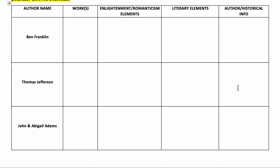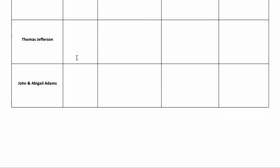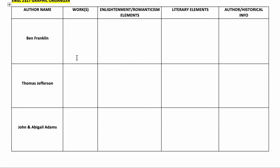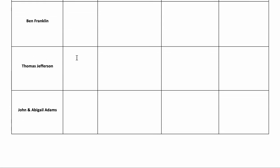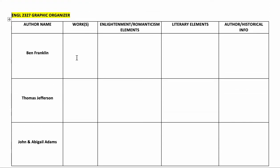I've listed the authors that you're going to read in this unit. You're going to read multiple works from some authors, one work from another. I don't expect you to take notes on five or six different poems — I want you to choose one or two of the works from each author, and then make sure that you have all of these boxes filled in with some information. That's how I'll grade this, for thoughtful completion.